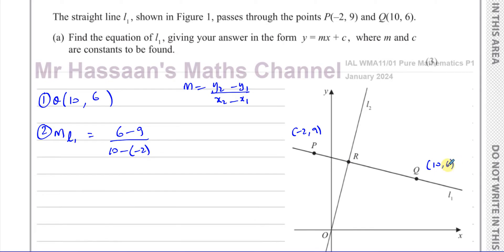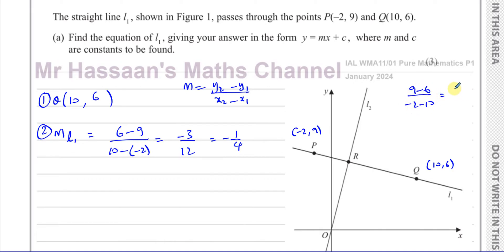Remember to be consistent — if you start with Q for the y-values, you must start with Q for the x-values too. That gives negative 3 over 12, which is negative one quarter. The diagram confirms this: the gradient should be negative and shallow, which matches. You could also do it the other way: 9 minus 6 over minus 2 minus 10, which also gives negative one quarter. So the gradient of L1 is −1/4.